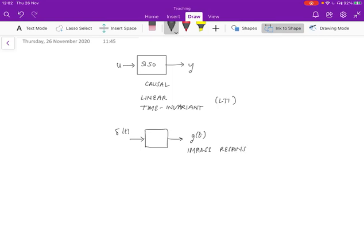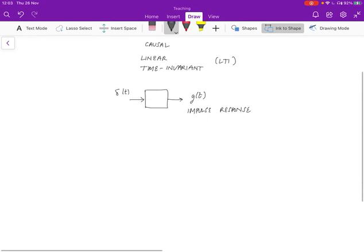If we're given the impulse response somehow, then the important part is that if you're given an arbitrary input to it, such as u of t, then the output is going to be given by u of t convolved with g of t.